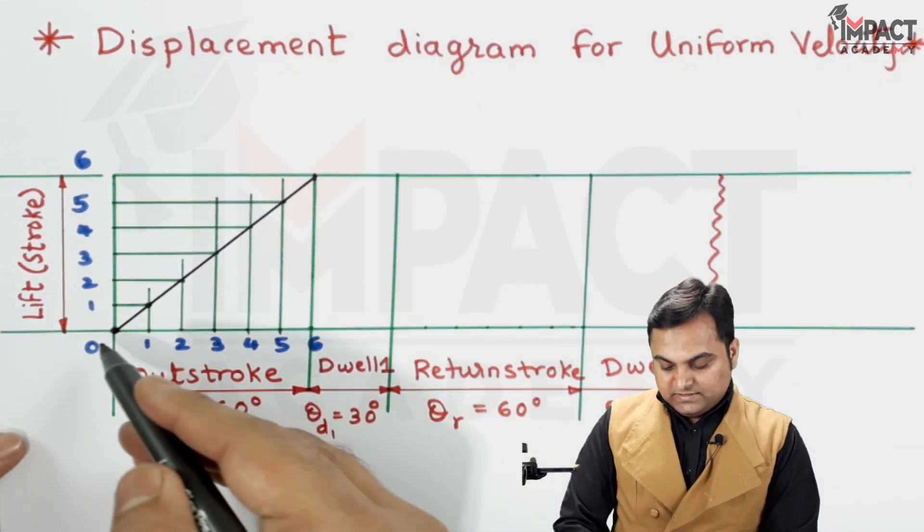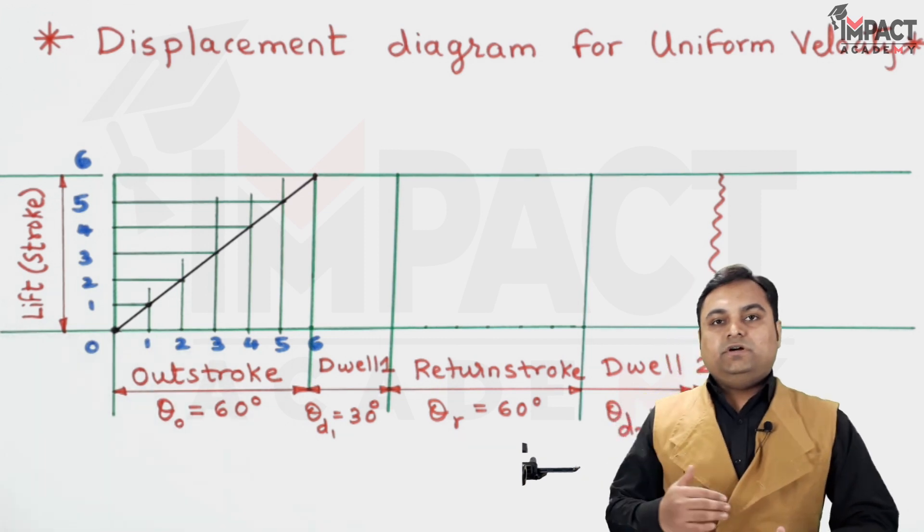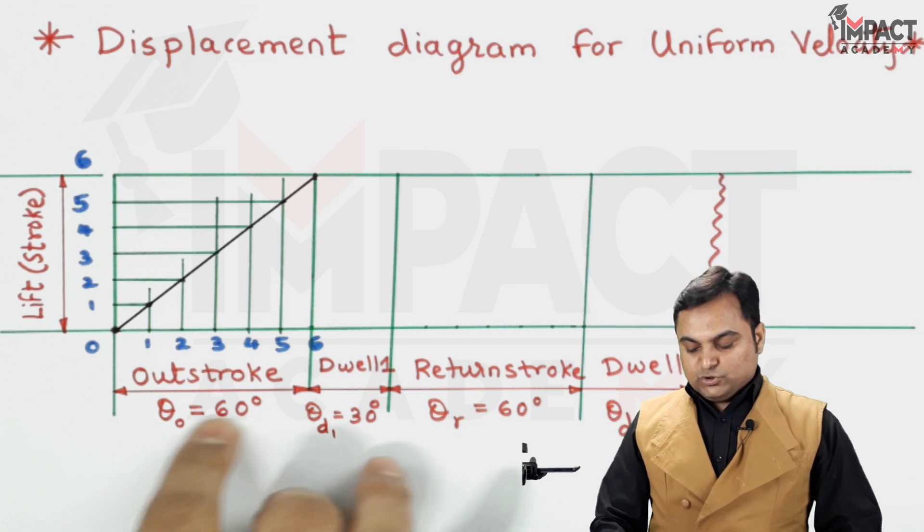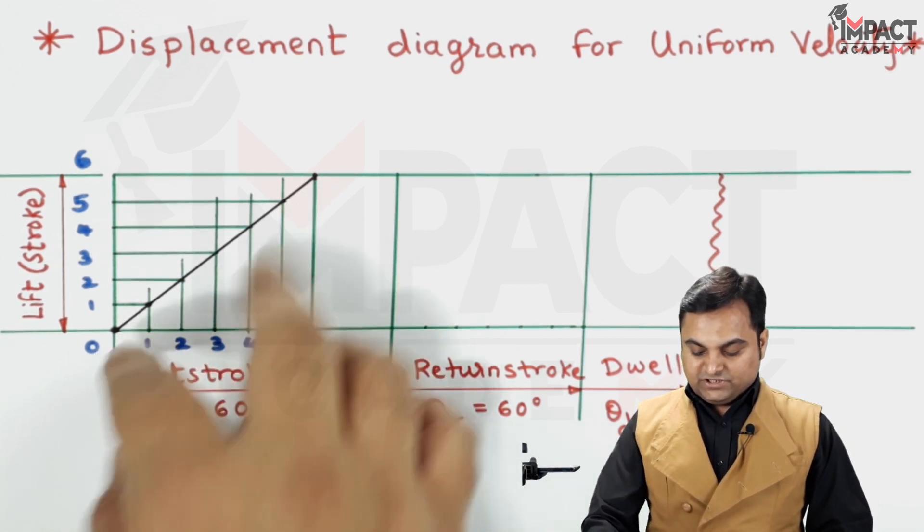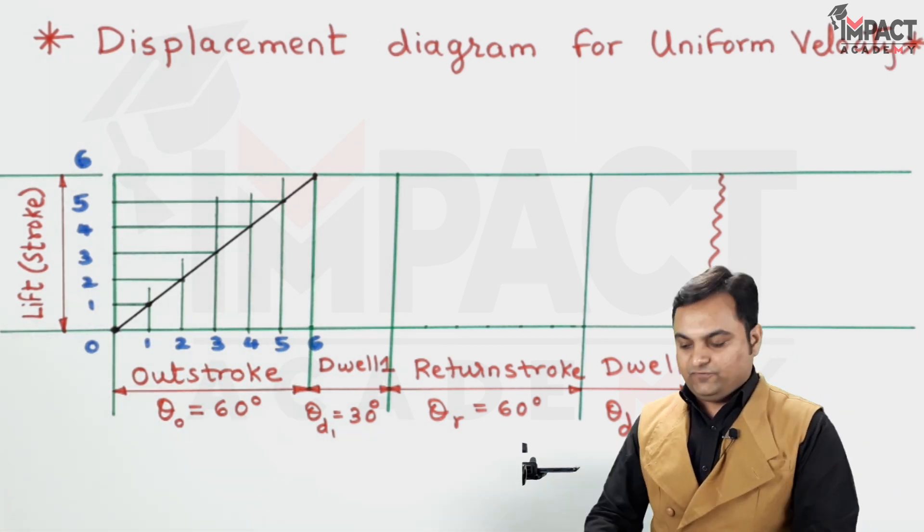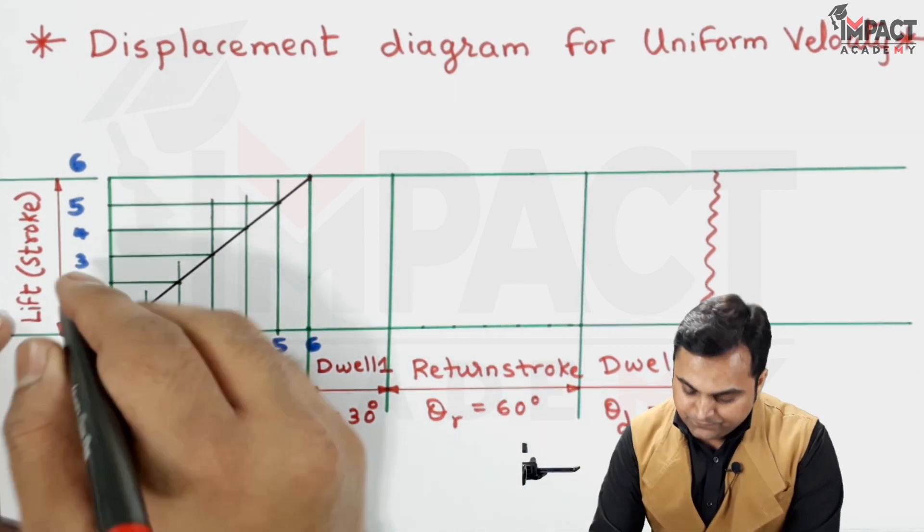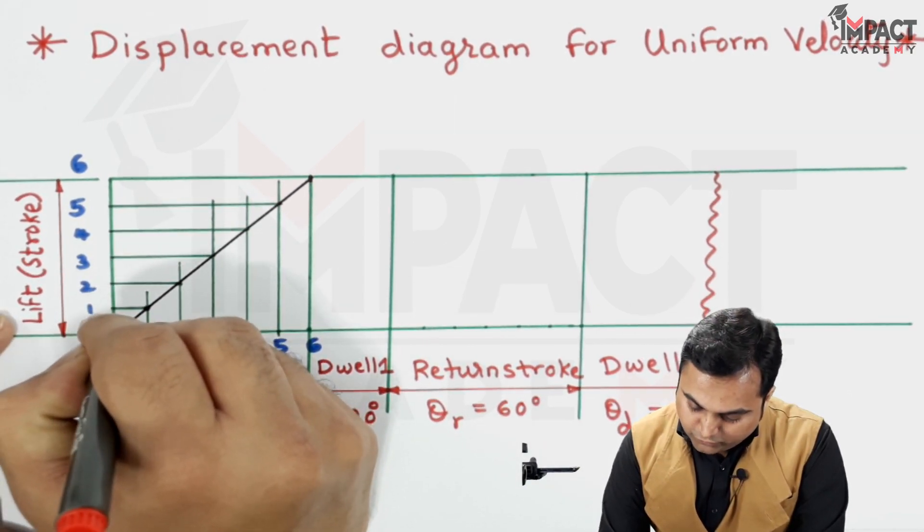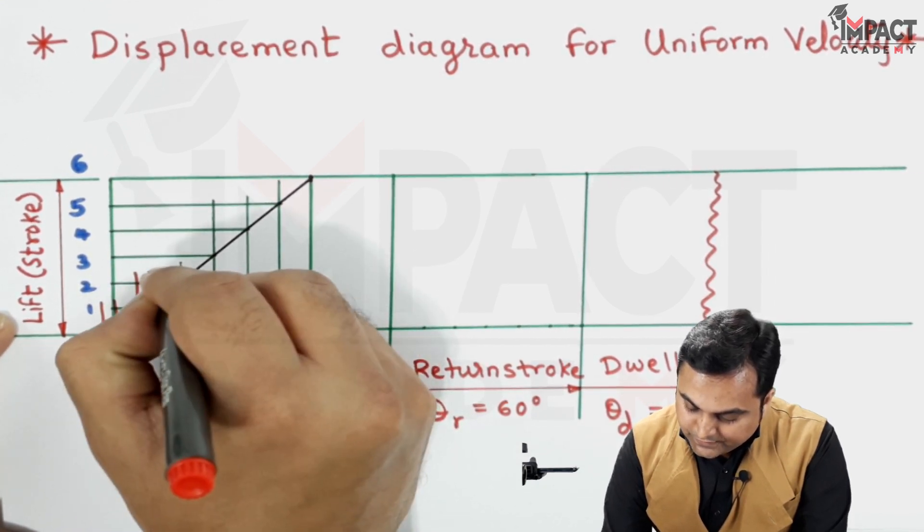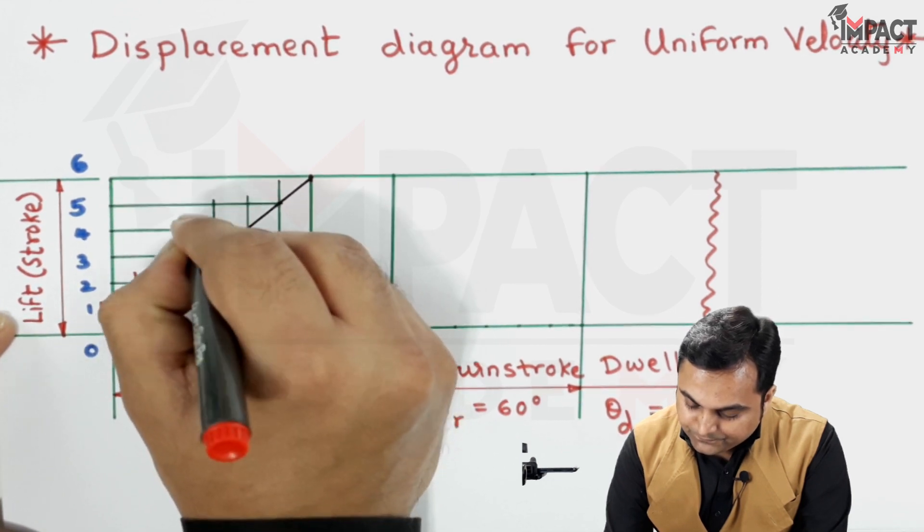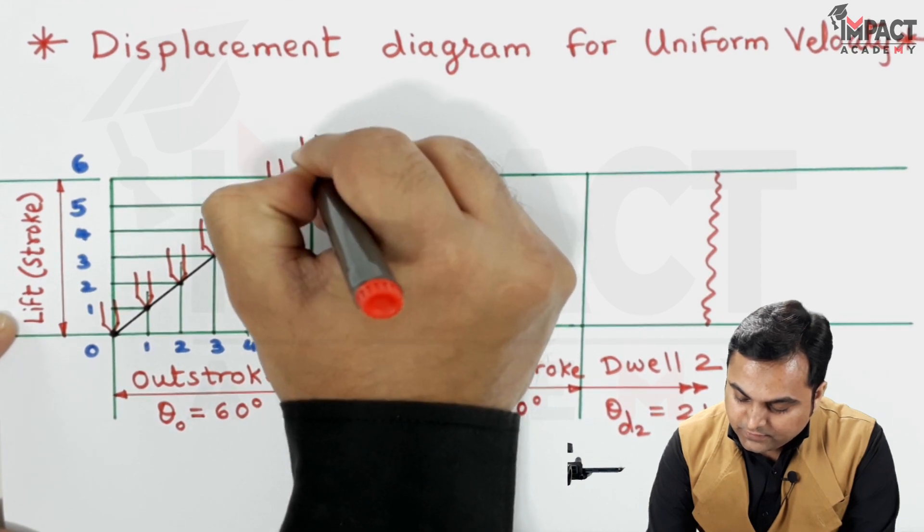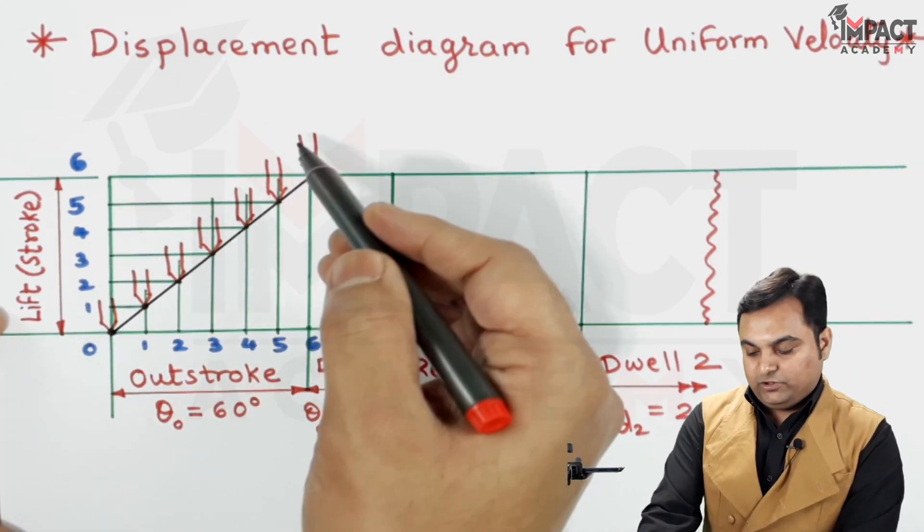So this line shows the ascent or the increasing order of the follower when the cam rotates. So when the cam is rotating by 60 degrees during the outstroke from 0 to 60, the follower, and here it is just an assumption, I am assuming it to be a knife edge follower, it can be any other type of follower as well. So at first the follower is at this 0 position, then it takes the next position at 1, then second with uniform velocity, and finally it would be reaching the maximum height in this way. This is the uniform velocity motion.